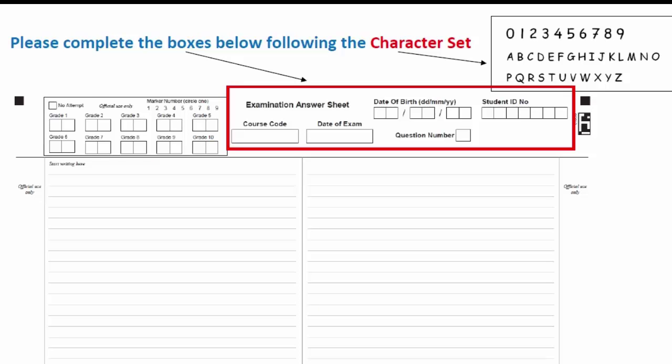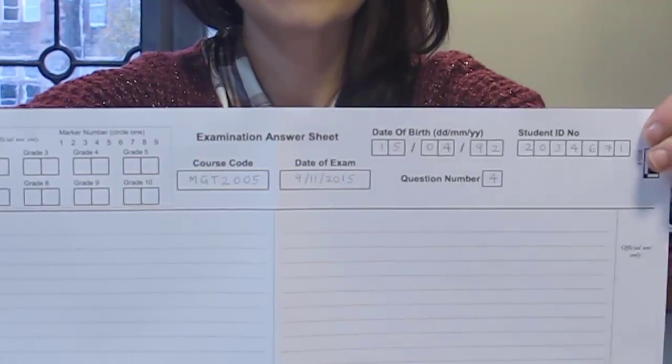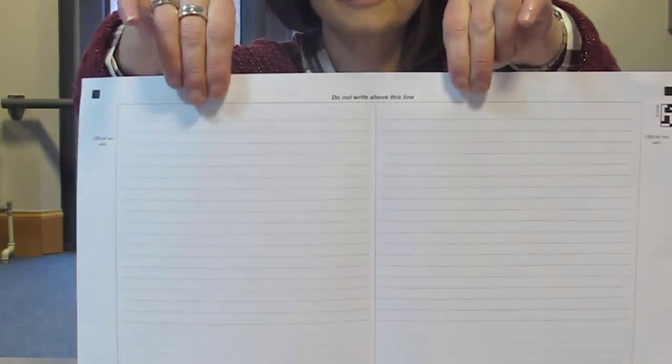The exam paper will provide you with the standard character set on how to write this information. You should start writing your answer on the left hand side of the A3 answer sheet, completing pages 1 and 2, and then turning over and continuing to pages 3 and 4.